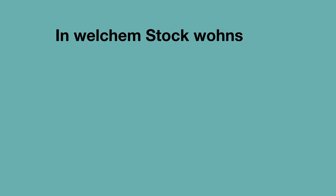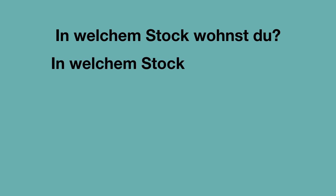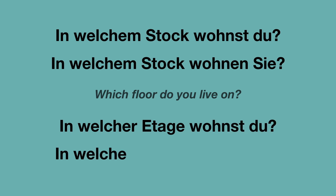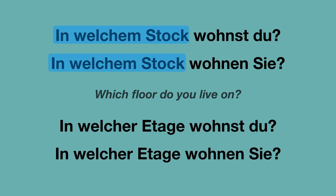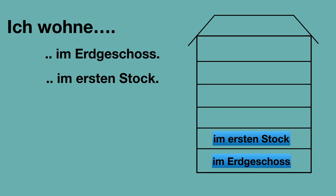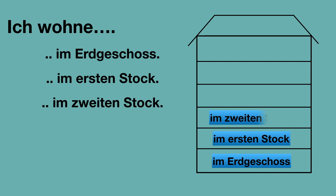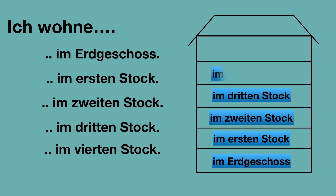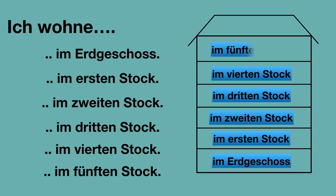In welchem Stock wohnst du? In der Sie-Form: In welchem Stock wohnen Sie? This means: which floor do you live on. Or you could also ask: In welcher Etage wohnst du? In welcher Etage wohnen Sie? Let's practice some answers: Ich wohne im Erdgeschoss — I live on the ground floor. Ich wohne im ersten Stock, im zweiten Stock, im dritten Stock, im vierten Stock, im fünften Stock.